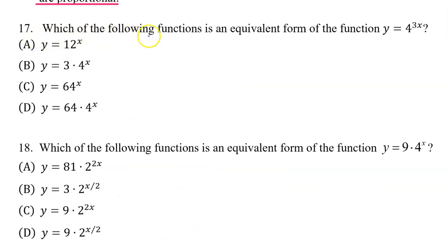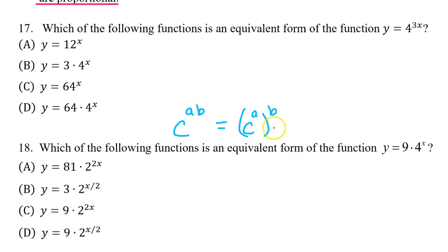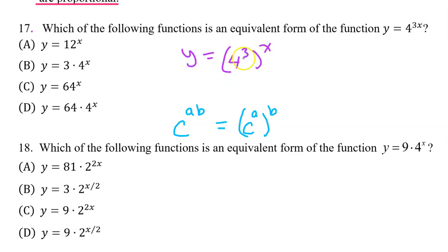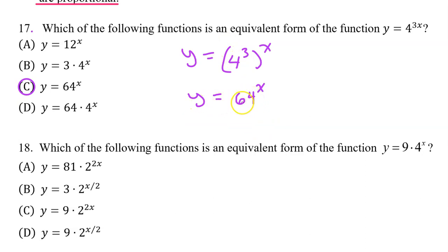Number 17: Which of the following functions is an equivalent form of the function y equals 4 to the 3x power? We learned that c to the a times b power can be rewritten as c to the a power, all raised to the b power. Using this property, we can rewrite this as 4 to the 3rd power, all raised to the x power. 4 to the 3rd power is 64, so we are left with y equals 64 to the x power, and the answer is C.